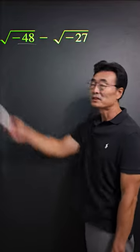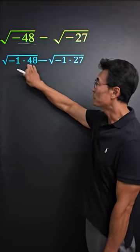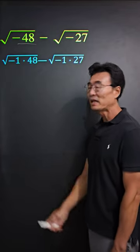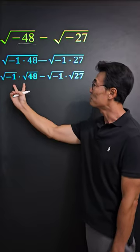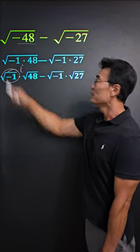If we have a negative number inside the square root, we need to rewrite it so that it becomes negative 1 times 48. Then we're able to write this as two separate square roots where square root of negative 1 equals i.